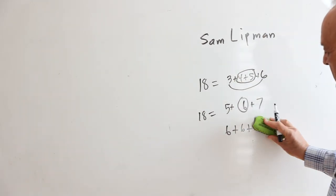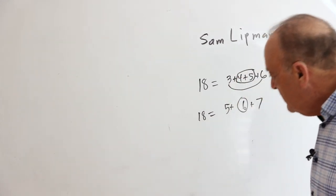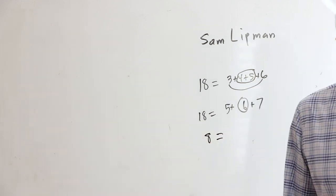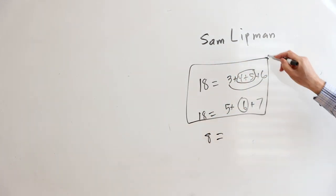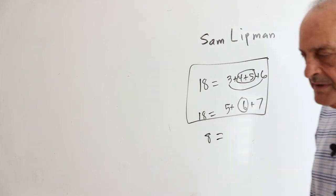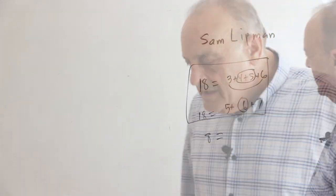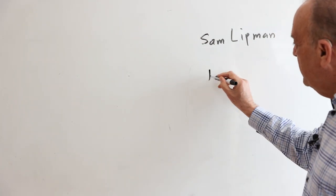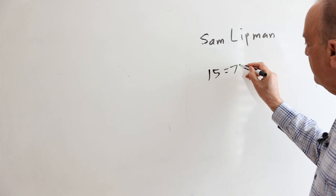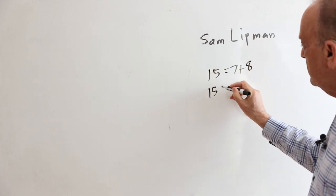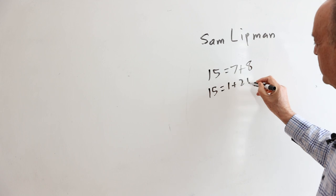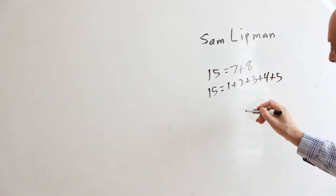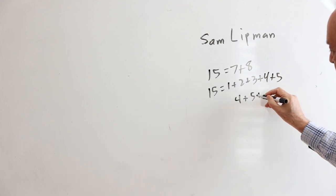And if you remember, some numbers can't be done at all. For example, 8 can't be done at all. Here's a number that can be done two ways. So what about three ways? Is there a number that can be done three ways? I think 15 does that. So 15 is 7 plus 8, 15 is also 1 plus 2 plus 3 plus 4 plus 5, and 15 is also 4 plus 5 plus 6.